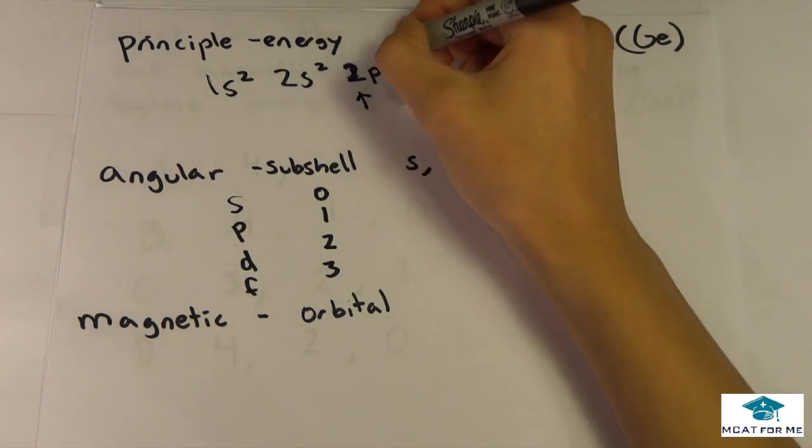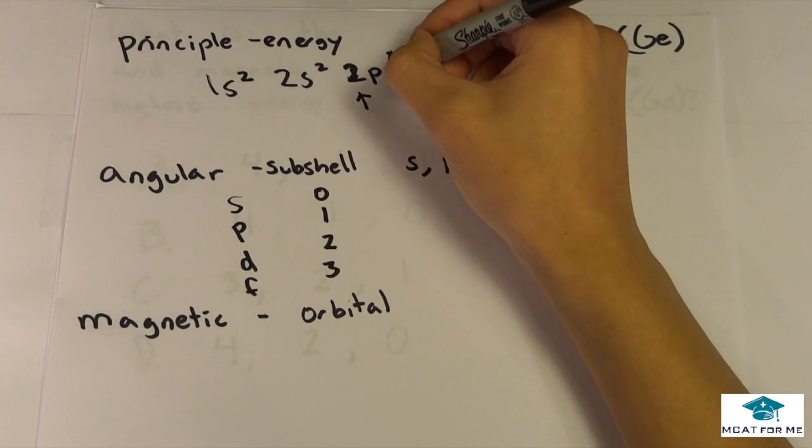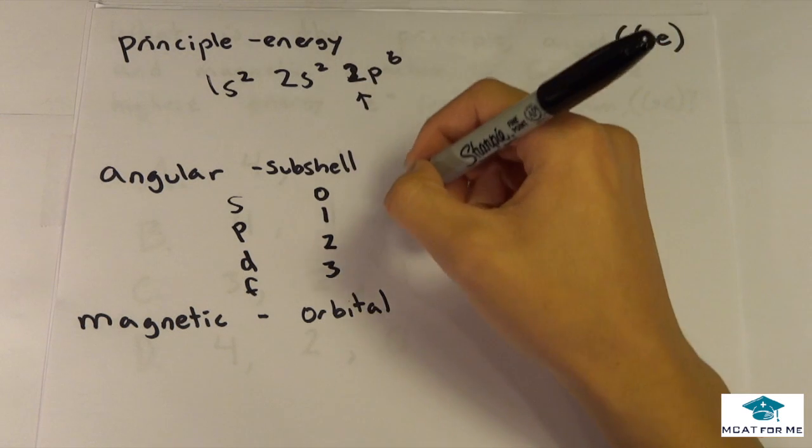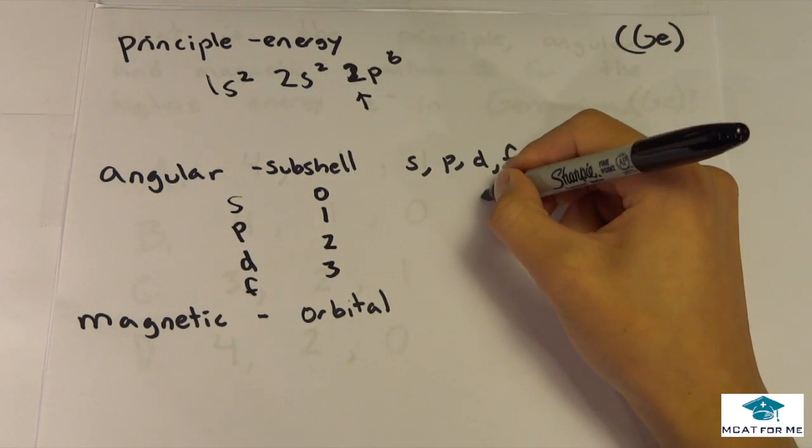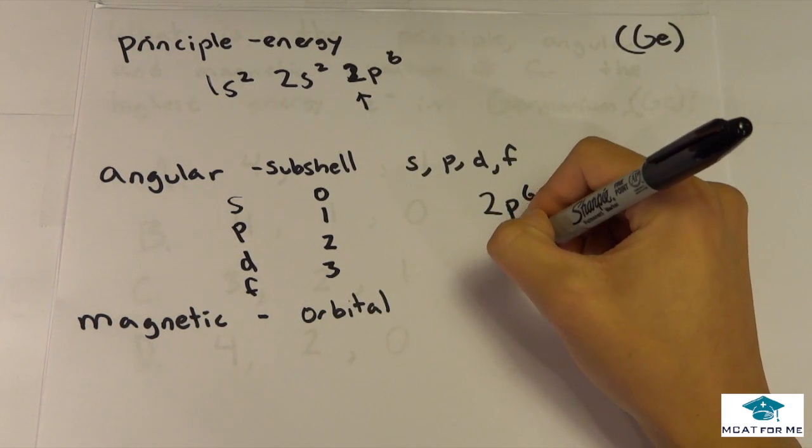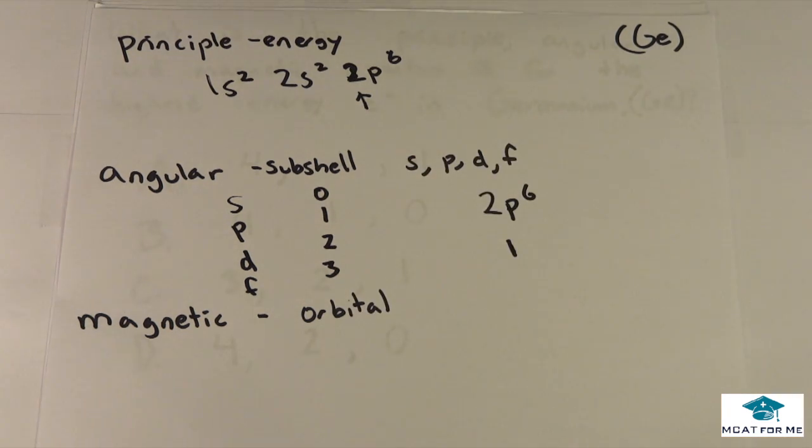So for example, this last electron, the electron in this orbital right here, would have an angular quantum number of 1, so 2p6 would have an angular quantum number of 1, because the p is equivalent to 1.